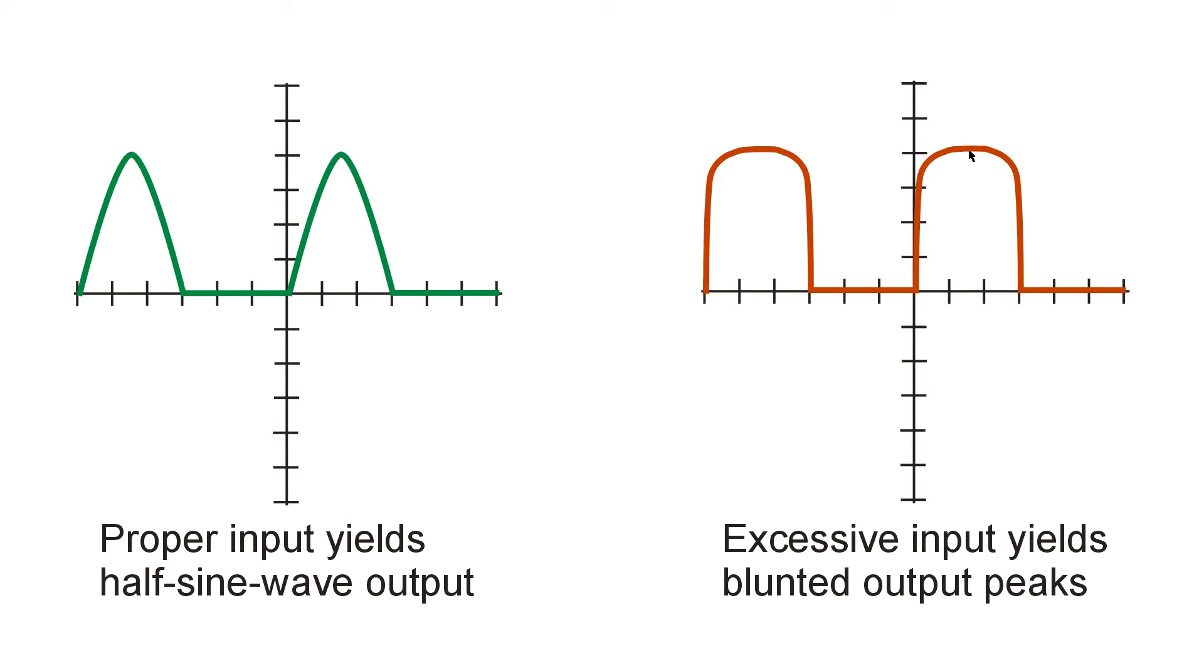So you end up getting blunted peaks. This is called flat topping. It produces harmonics on the signal itself and distortion in the modulation envelope. So you want to avoid this kind of situation at all costs.